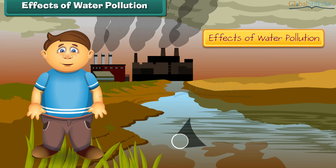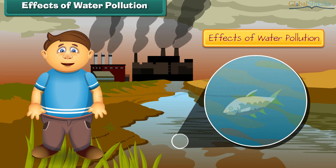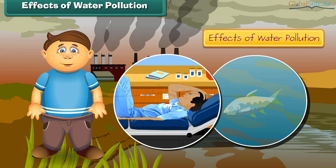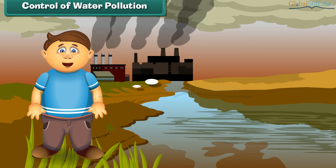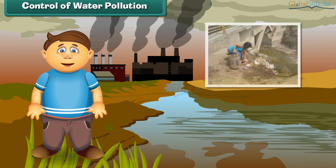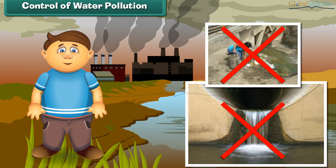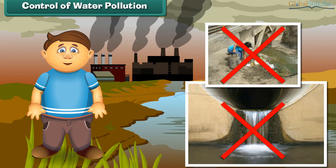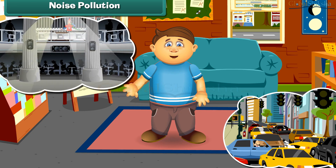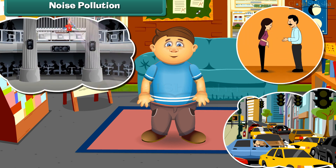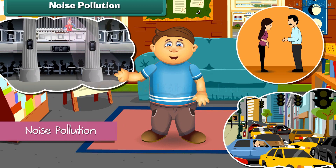What are the effects of water pollution? Poisonous chemicals released from factories and industries enter water bodies, due to which marine life is getting affected. If we consume such fish, we will also fall ill. Can we control water pollution? The answer is yes. To control water pollution, we should not dispose garbage and harmful chemicals directly into ponds, lakes, and rivers.